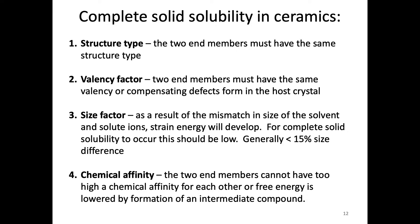The four factors we'll look at are: structure — do they have the same or similar structures; valency — do they have the same valence; size — are the cation and anion sizes reasonably close so there's no strain (the 15% rule from metals is a good starting rule); and chemical affinity — you don't want the difference in chemical affinity to be too high. Basically, you need as many things to be similar as possible.